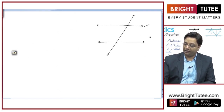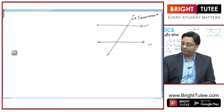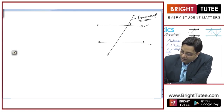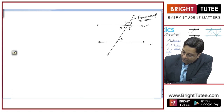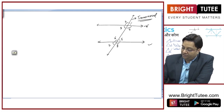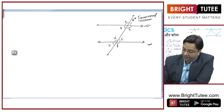These two are parallel lines and this is the transversal. We will focus on these angles. This angle, let us name it as 1, 2, 3, 4, 5, 6, 7, 8. These two lines are parallel and these are the angles when these lines are cut by a transversal.